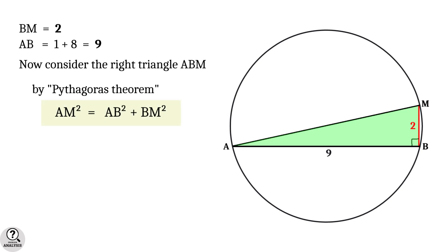By applying the Pythagorean theorem, we get AM squared equals AB squared plus BM squared. Therefore, AM squared equals 9 squared plus 2 squared equals 81 plus 4, that's equal to 85.